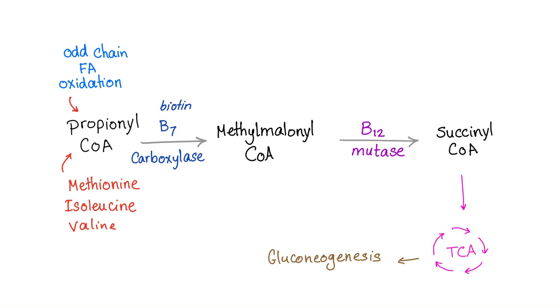Thank you, carboxylase. By help of biotin or vitamin B7, now we have methylmalonyl-CoA. Thank you, B12. And mutase enzyme, which will convert the methylmalonyl-CoA into succinyl-CoA. Succinyl-CoA goes to the Krebs cycle, where gluconeogenesis will occur. Gluconeogenesis is forming glucose from new sources, such as fatty acids.